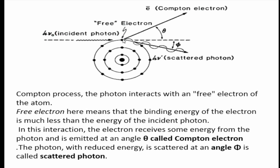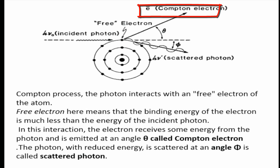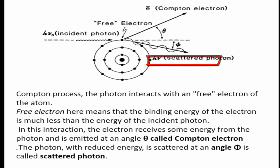Whenever an incident photon strikes with this free electron, the electron will be ejected at a particular angle theta, and the scattered photon goes at angle phi. Here, free electron means that the binding energy of the electron is much less than the energy of the incident photon. The electron receives some energy from the photon and is emitted at angle theta, called the Compton electron, and the photon with reduced energy scattered at angle phi is called the scattered photon.